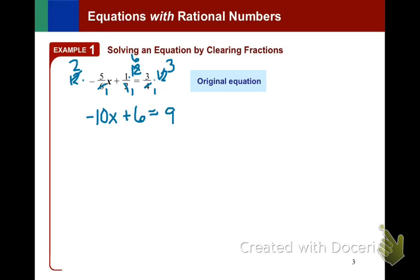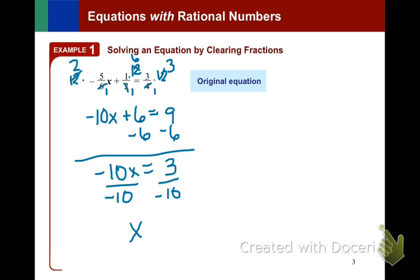So I now have a new equation with integer coefficients, and I have gotten rid of the fractions by multiplying each term in the original equation by the lowest common denominator of all three denominators. Now I have a simple two-step equation to solve. I'll subtract 6 from both sides. I'll get negative 10x is equal to 3. Divide by negative 10, and I'll get x equal to negative 3 tenths, and I can check my work.